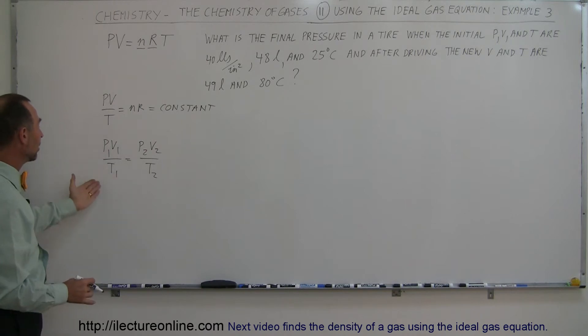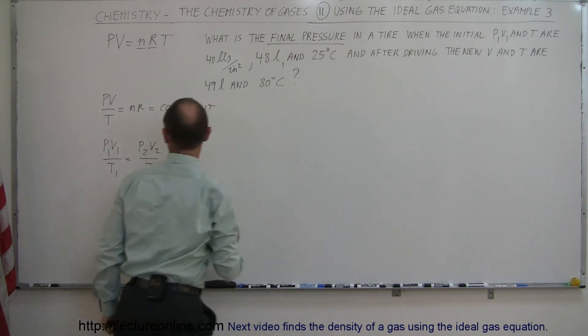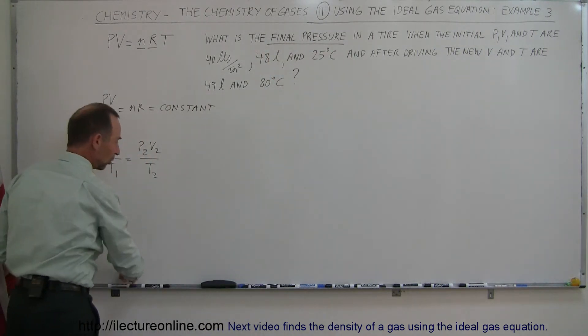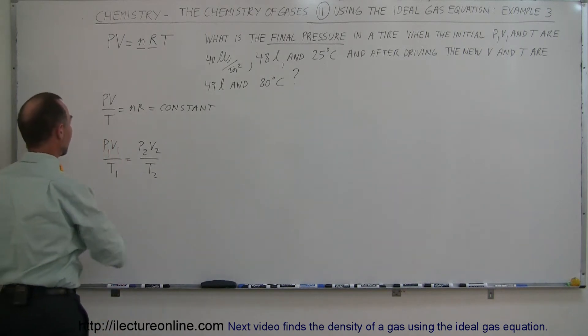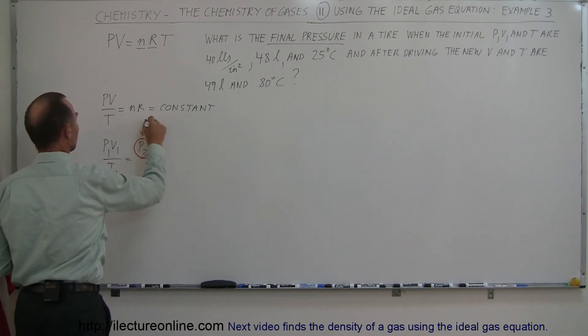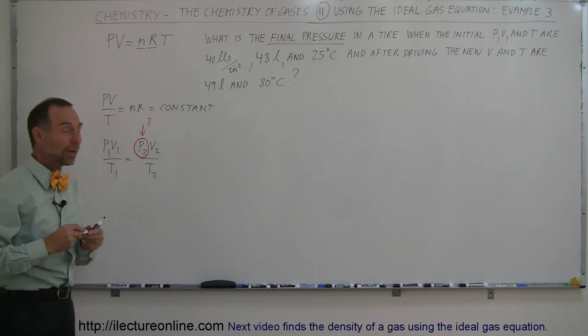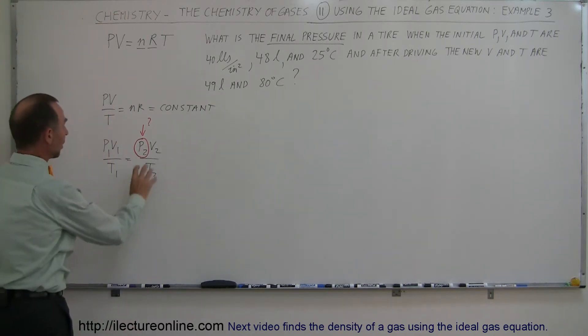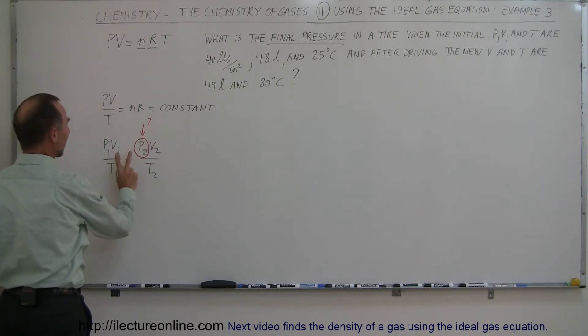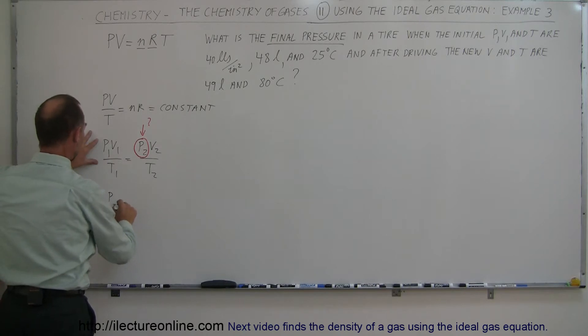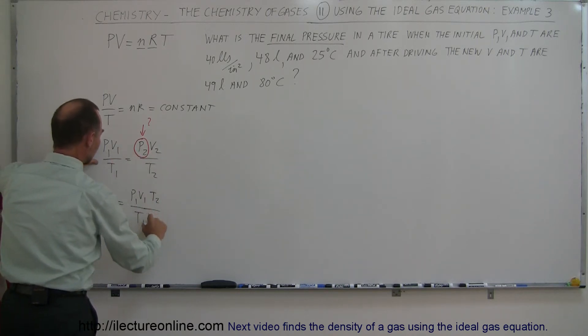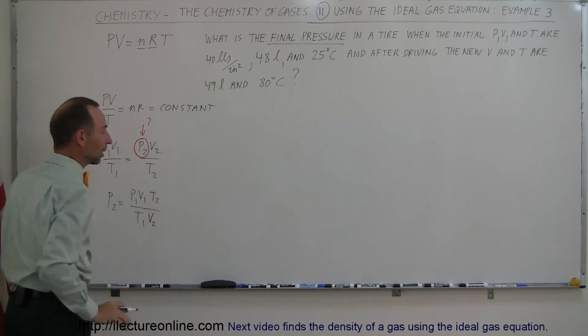So in this case, P1V1 over T1 equals P2V2 over T2, and they want to know the final pressure, so the final pressure is P2. Here's my red pen, so since we're looking for P2, we're going to rearrange that equation now for P2, which means T2 is going to go up here, V2 is going to come down here. So I end up with P2 is equal to P1V1 over T1 times T2 divided by V2, so I just have to plug those numbers in.